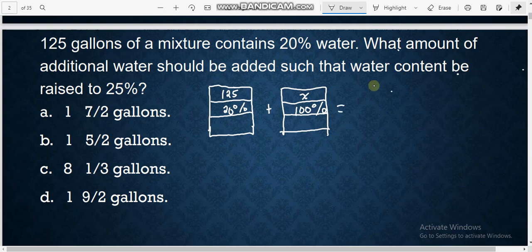So the result here, we have since we are adding the first and the second mixture, so the amount of gallons is 125 plus x. And what is our percentage of water here? Content raised to 25%, water content be raised to 25%, so this is 25%.